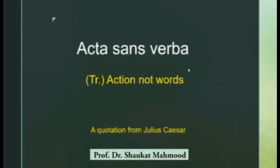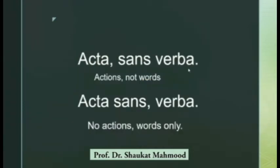Then I have a quotation from Julius Caesar. He said 'acta sans verba.' The translation is 'action, not words.' But 'action not words' again makes no sense unless punctuation marks are added. If we add the punctuation mark, it reads: 'acta, comma, sans verba' — meaning Julius Caesar is saying we need action, not words. So 'acta,' then a comma, and 'sans verba' means 'not words.'